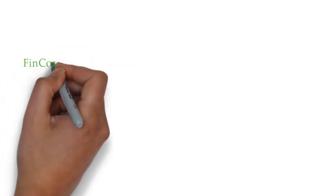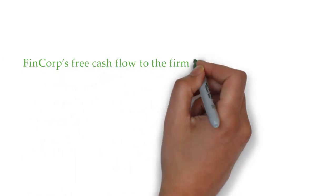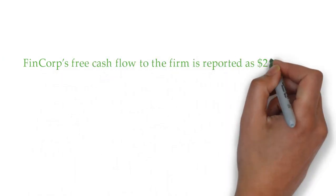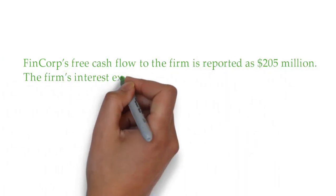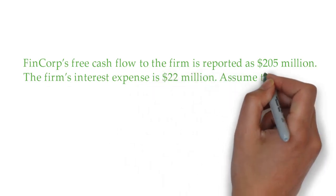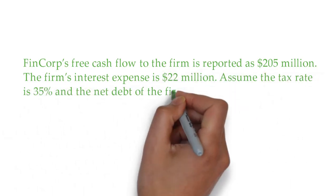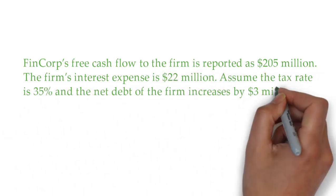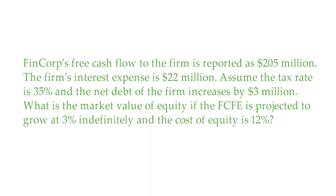Let's take an example. Finance Corporation's free cash flow to the firm is reported as $205 million. The firm's interest expense is $22 million. Assume the tax rate is 35% and the net debt of the firm increases by $3 million.